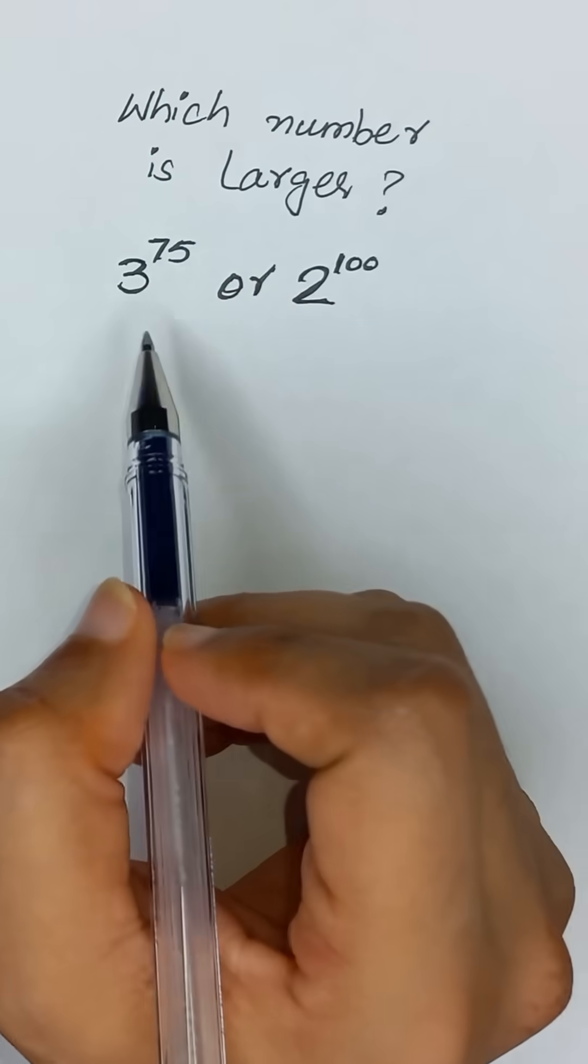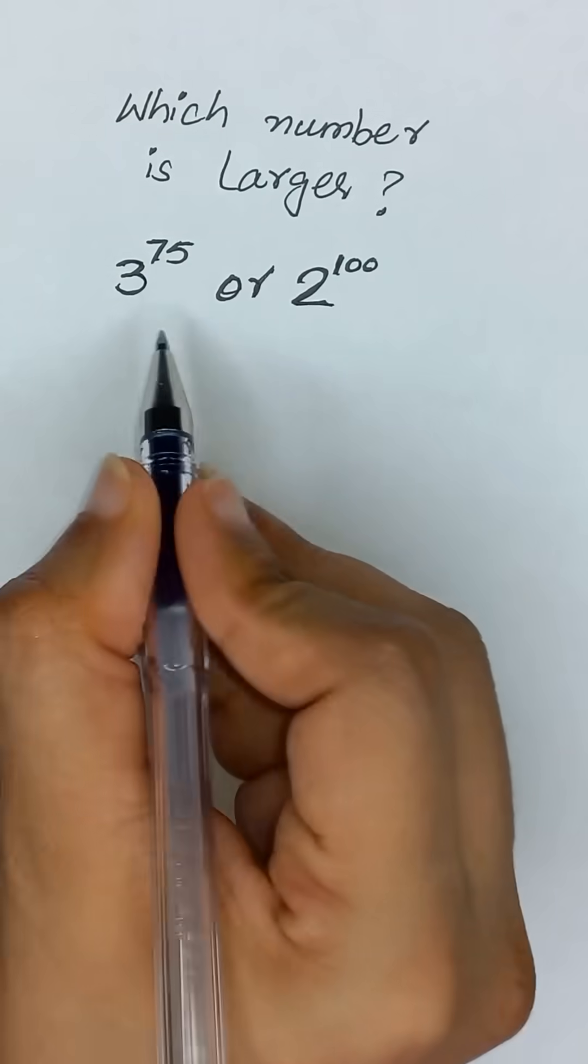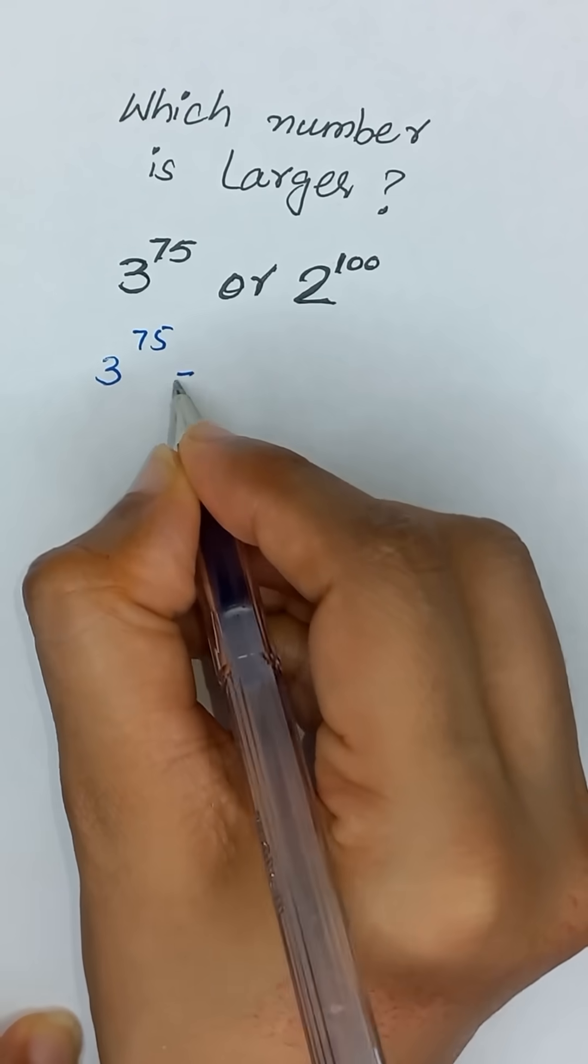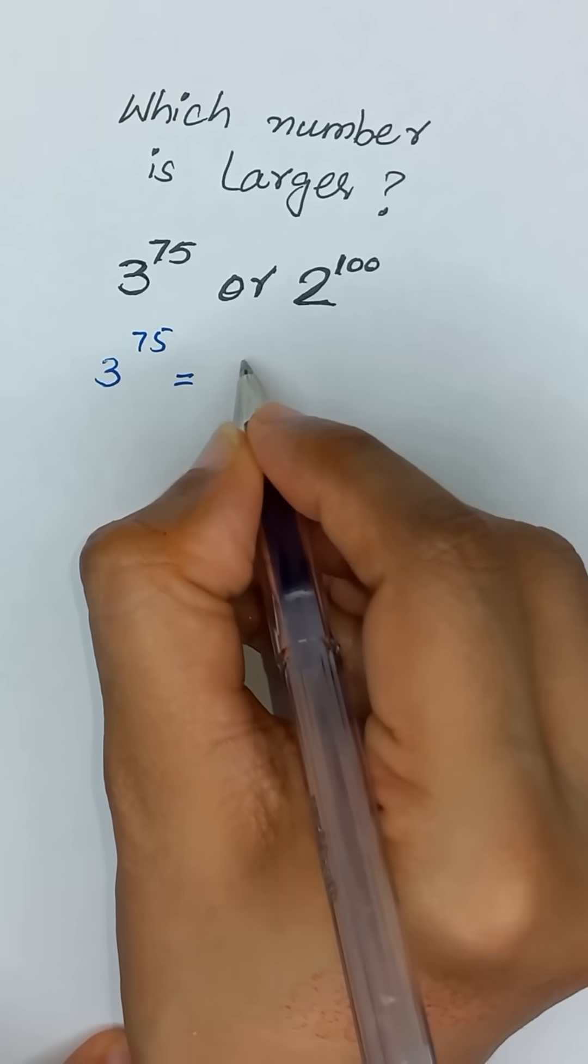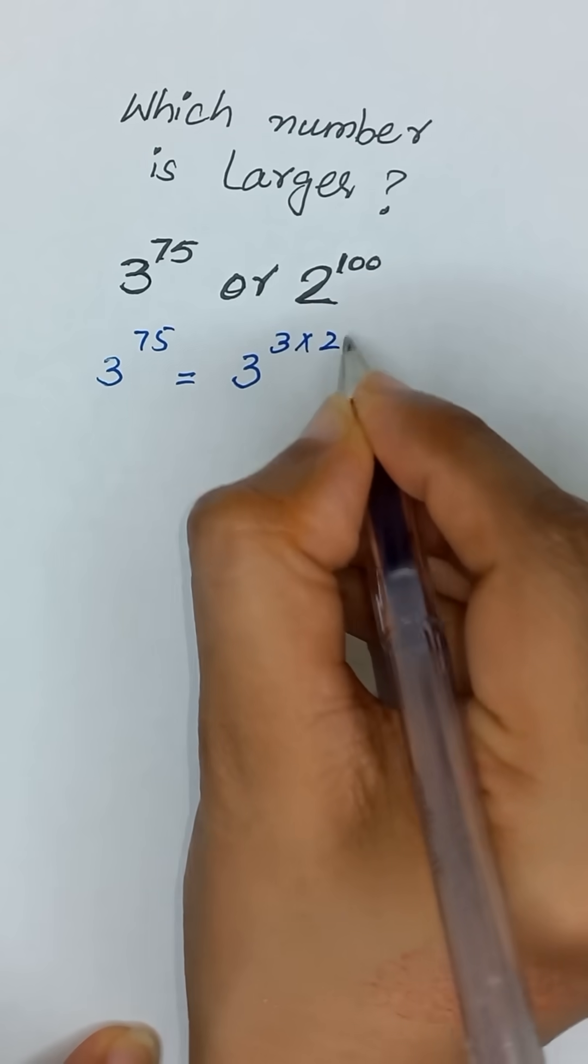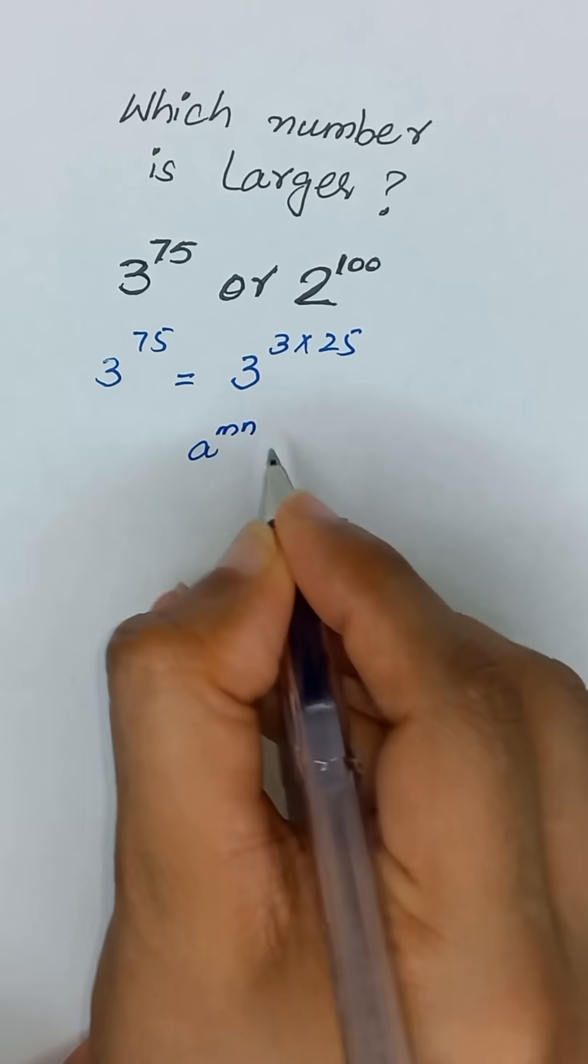Which number is larger, 3 to the power 75 or 2 to the power 100? So first of all, we will solve 3 to the power 75. We can write 3 to the power 75 as 3 to the power 3 times 25.